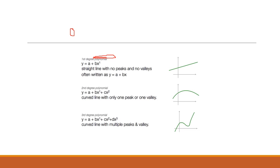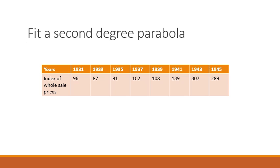Now here is the data: years and index of wholesale prices. We have eight years of data. We have to fit a second degree parabola — the equation with the highest power of two — representing the line with a single band or one valley.